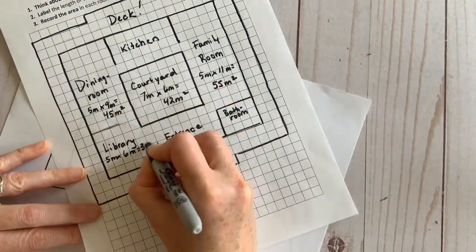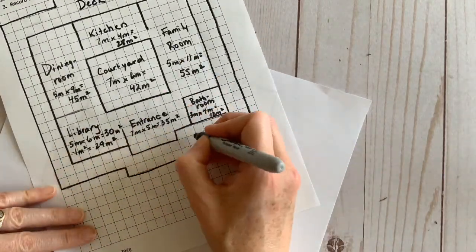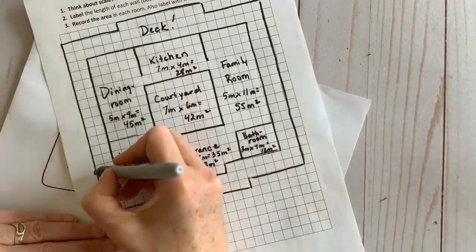For irregular spaces, it is okay to either count the squares individually or divide them into smaller squares and rectangles in order to find the area.